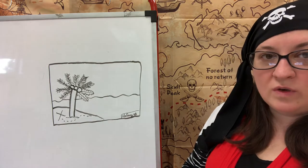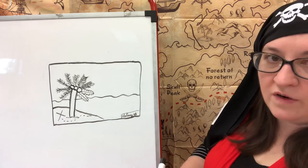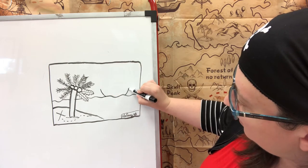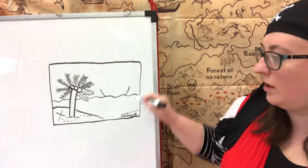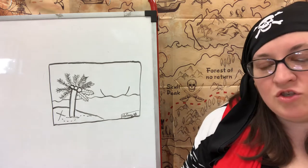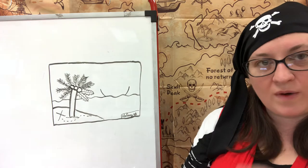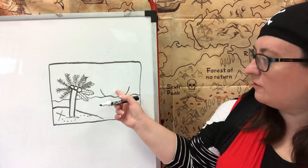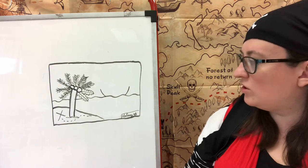Now we're going to start adding in the pirate ship. To do the pirate ship, we're going to do a curve line coming out of this side and a curve line coming out of this side - it's going to look like a big smiley face or a big cereal bowl floating around in the water. Notice the tree looks a little bigger than the pirate ship because the tree is in the foreground; you can tell the ship is farther away because it's smaller.